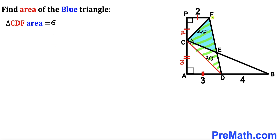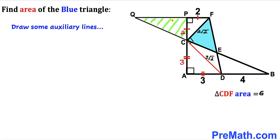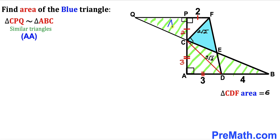In the next step, I have constructed right triangle CPQ by extending line FP all the way to point Q, and likewise extending line EC all the way to Q as well. We can see that right triangle CPQ is similar to right triangle ABC according to the angle-angle similarity theorem.